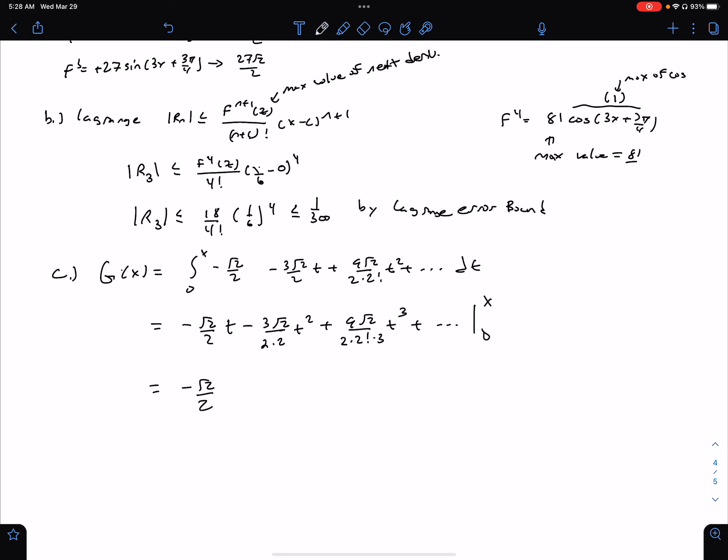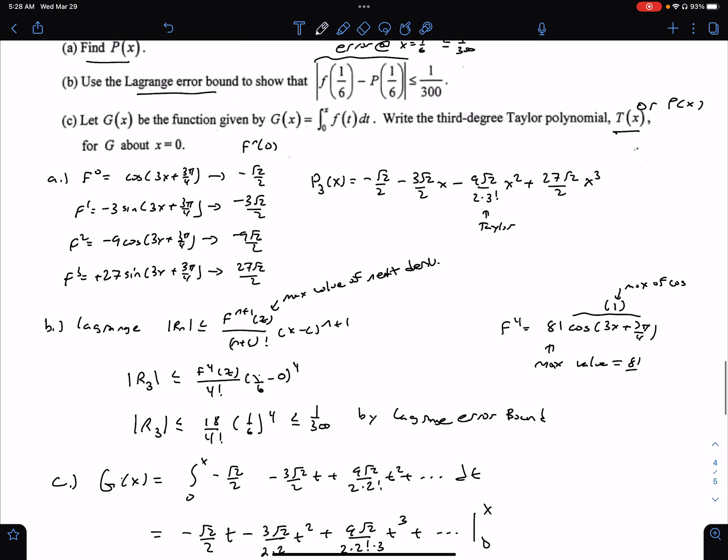we get negative √2/2 x minus 3√2/4 x² plus 9√2/12 x³ plus dot dot dot. Now let me make sure I've got the answer here. I only want a third-degree Taylor polynomial,